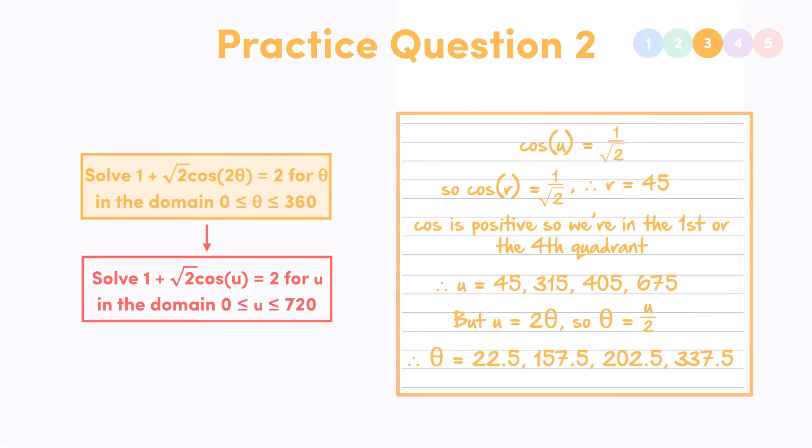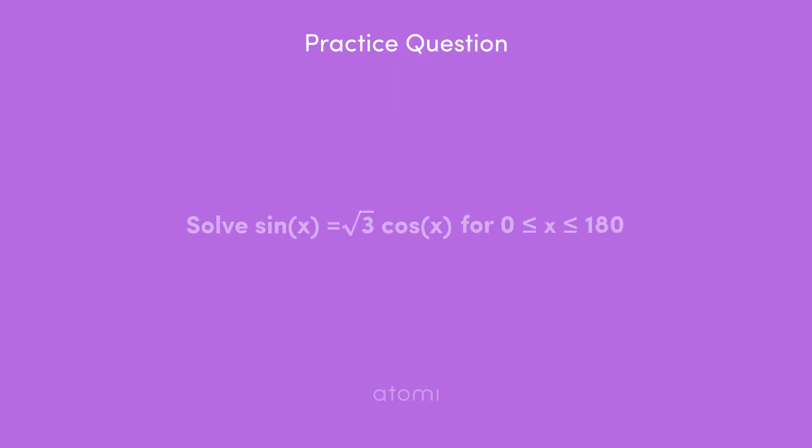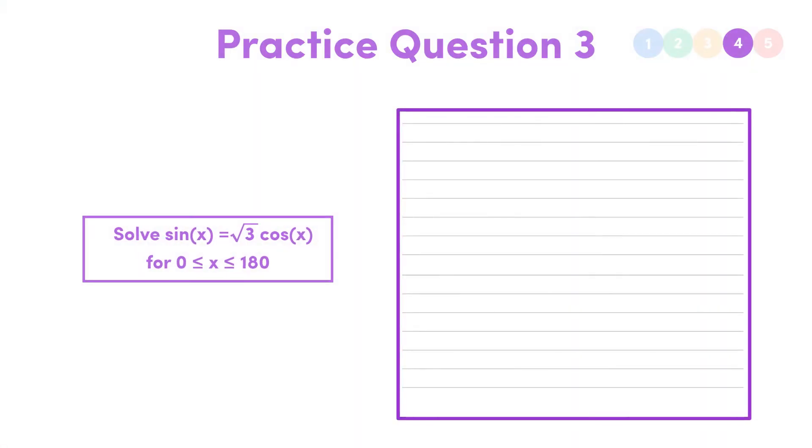Here it is. Solve sine x equals root 3 cos x for x between 0 and 180. All right. Now this one is the hardest of the three that we've tackled, because here we have two different types of trig functions.